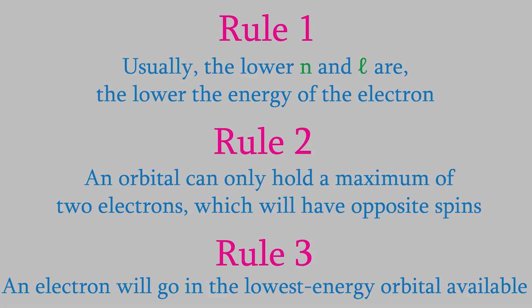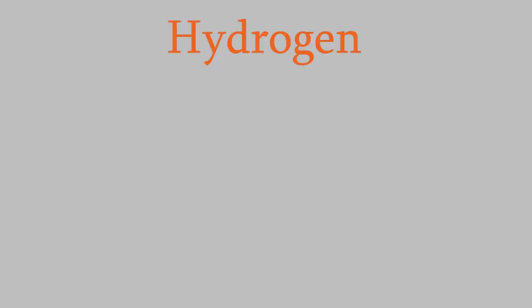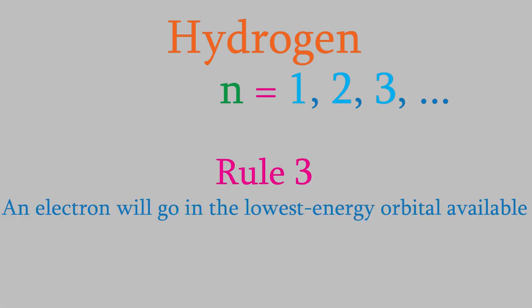Let's see what these three facts mean for the ways electrons behave in atoms. We'll start with the simplest atom, hydrogen. Using what we now know about electrons, we can determine all the quantum numbers for the electron in a hydrogen atom and tell what orbital it's in. We'll start with n. We know that n can have any integer value from one on up. However, electrons like to have the lowest energy possible, so the electron will go into the lowest numbered shell, which has a value of n equals one.